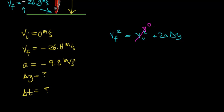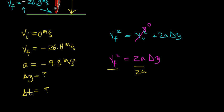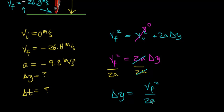Since our initial velocity is 0 meters per second, the equation simplifies to: final velocity squared equals 2 times the acceleration times the height. Since we're looking for the height, we divide both sides by 2 times the acceleration — just like we did in the last case. The 2a cancels out, and we find that the height equals the final velocity squared divided by 2 times the acceleration due to gravity.